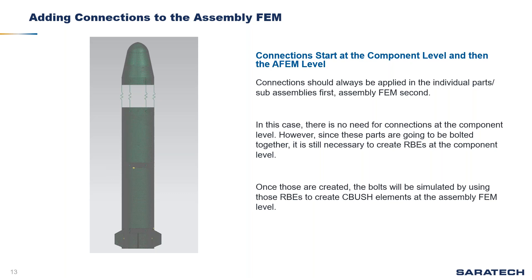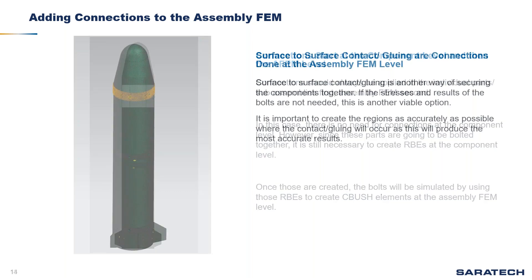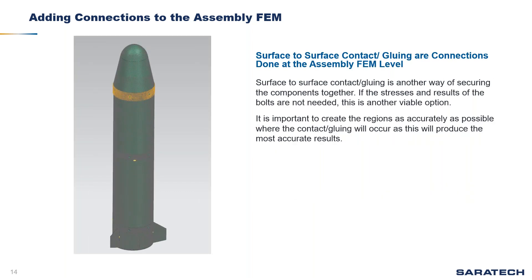This takes us into adding connections to the assembly FEM. Connections should really be applied at the individual component and sub-assembly level first, and then at the assembly FEM level second. In this case, where we want to bolt all components together, there's no real need for connections at the individual component level — but since we know we're going to bolt them together, we still want to create our RVEs at the individual component level.